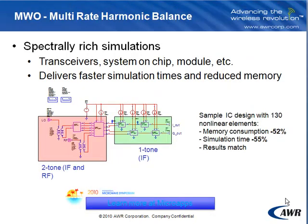Multi-rate harmonic balance is a new simulation technique that goes beyond the limitations that harmonic balance may have with high tone count simulations. These are typically spectrally rich simulations — we're talking about transceivers, system-on-chip, or modules. Multi-rate HB allows you to deliver much faster simulation times in a reduced memory space. In this example I'm showing here, we have a QPSK modulator with about 130 nonlinear elements — a very dense solution in the harmonic balance simulation space.